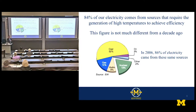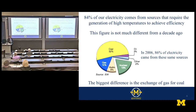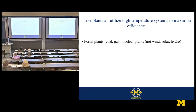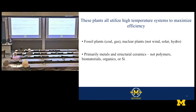So the message here is that high-temperature materials for electrical energy generation are going to be needed for a long time. We're not going to see this go down to zero in the next 10 years. The biggest difference in the last 10 years is that gas has doubled in capacity factor and coal has gone down by about 40%. All these systems use high temperatures to generate very high efficiencies — fossil plants in terms of gas and coal, and nuclear plants. The materials I'm talking about are primarily metals and alloys and some structural ceramics, like silicon carbide and even graphite.